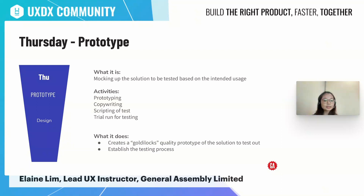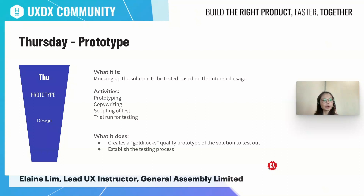Come Thursday, the team will split up into different roles to produce a mock-up of the solution to be tested. This is where you create a Goldilocks quality type of solution to test out and communicate the concept to potential users. We call it Goldilocks because we don't want to spend too much time on it — if we spend too much effort building this prototype, we fear that the team will get too vested to pivot away from the initial solution or to iterate on it.